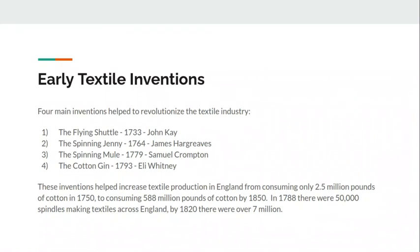Some early textile inventions: there are four main inventions that helped revolutionize the textile industry. I would make sure you're familiar with the spinning jenny and the cotton gin from Eli Whitney. Three of these inventors were English and one was American. These inventions helped increase textile production. Textiles are basically fabric-type things — think clothes, blankets, things that are sewn or woven together.